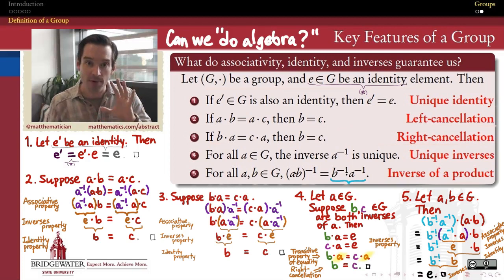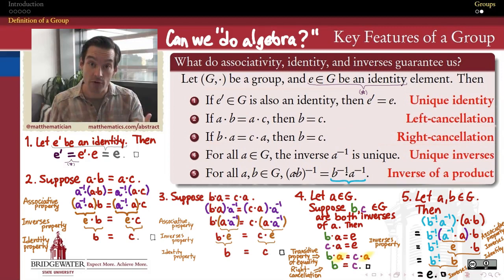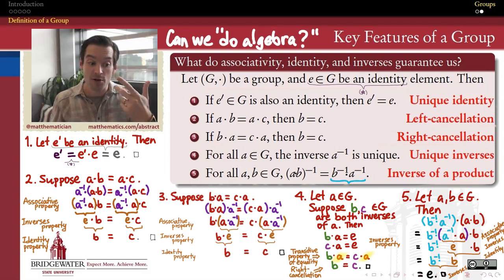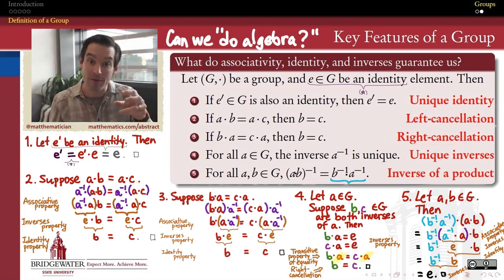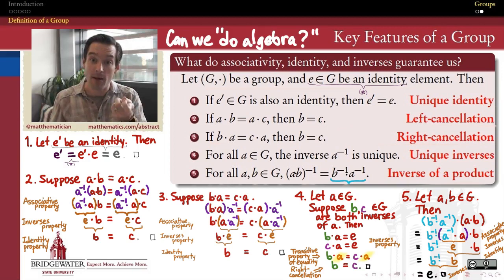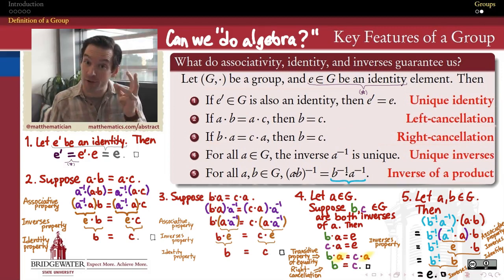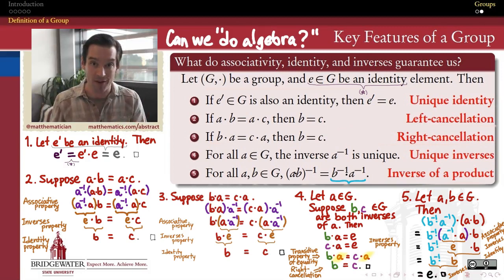This set of five properties gives us reassurance that if we have the structure of a group — even as sparse as that structure is: associativity, closure, identity property, inverse property — just having those four things, no matter what kinds of elements are in our set or what kind of operation we're using, as long as it satisfies those four basic properties, we can do an awful lot of what looks like algebra.